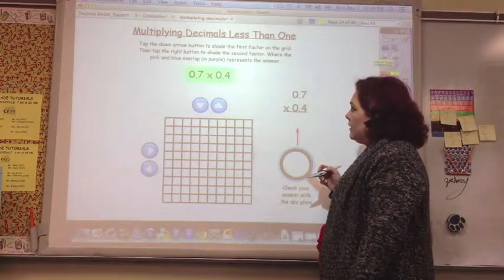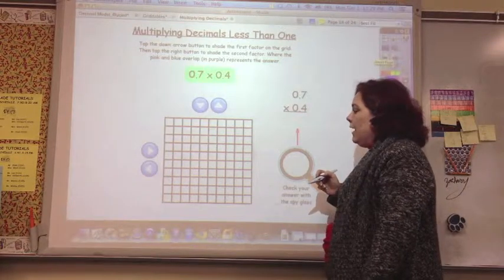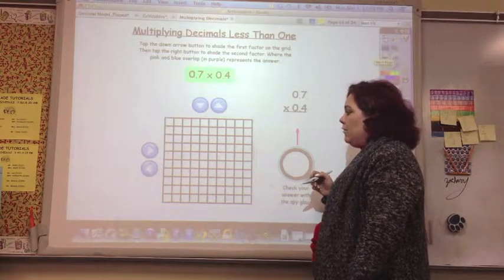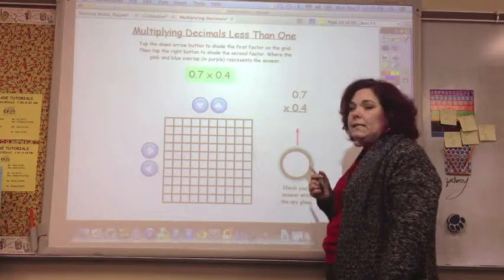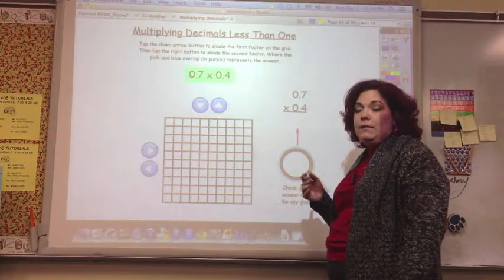So this is still multiplying decimals less than one. So go ahead and in your notes, try to sketch this out and see what you would come up with and see what would be double shaded.